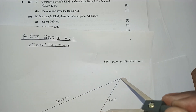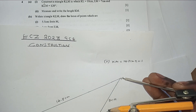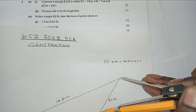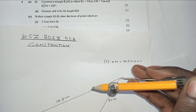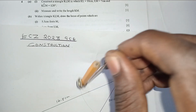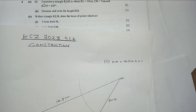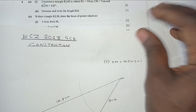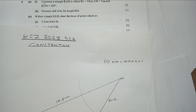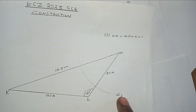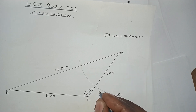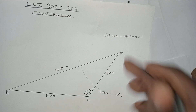You get your compass set to 5.5 centimeters, stand at point M, and draw an arc which passes through or within triangle KLM. That is the solution to part D1. Indicate the 5.5 centimeters from point M.